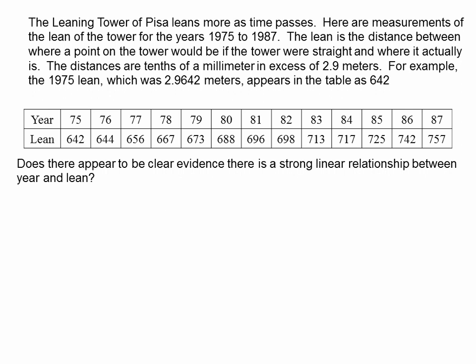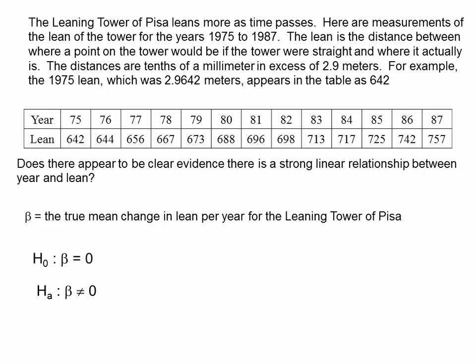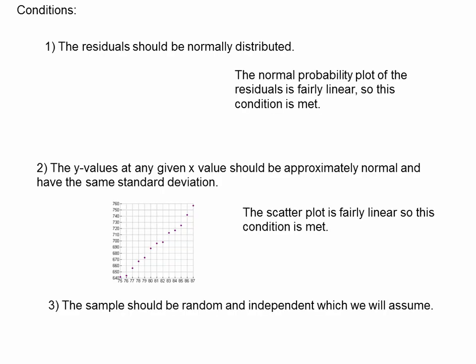And this is the information that we're given. And we just went over our parameter, our null hypothesis, our alternative hypothesis. We went through all of our conditions, and this is where we ended up. We are able to move on with our test statistic, which is a regression t-test.